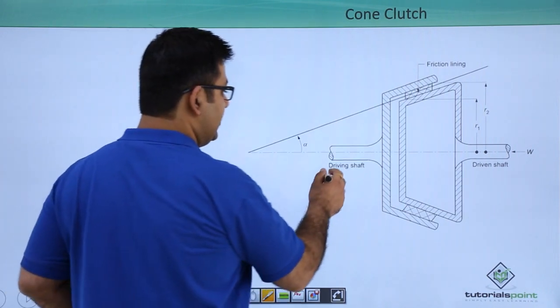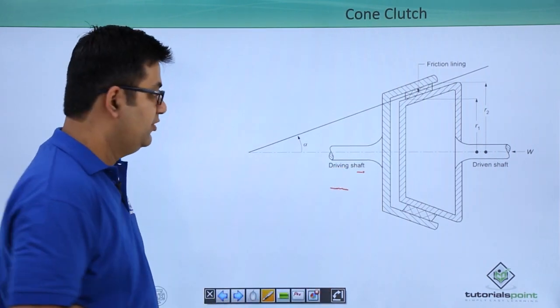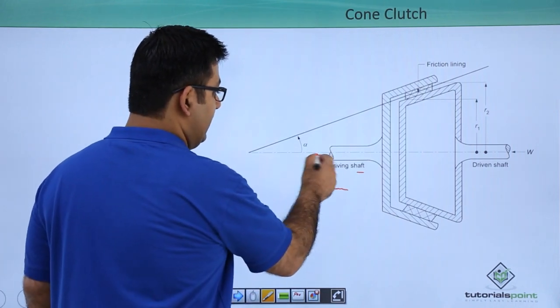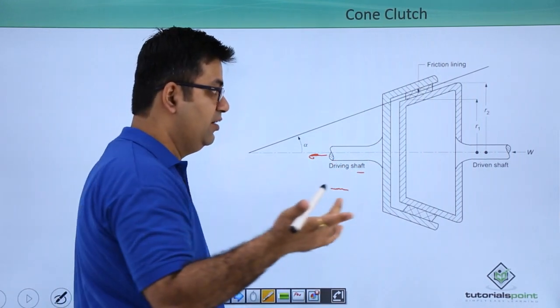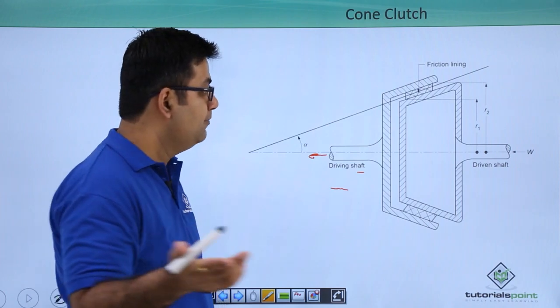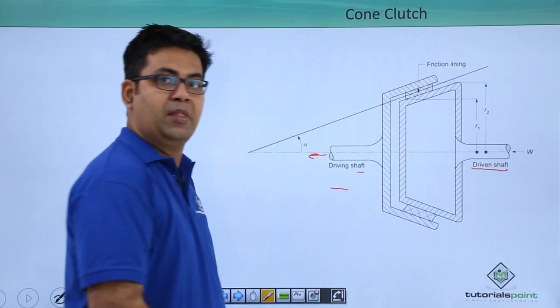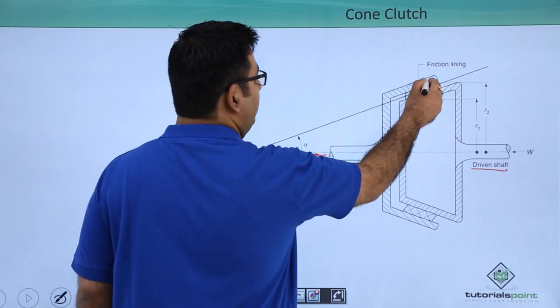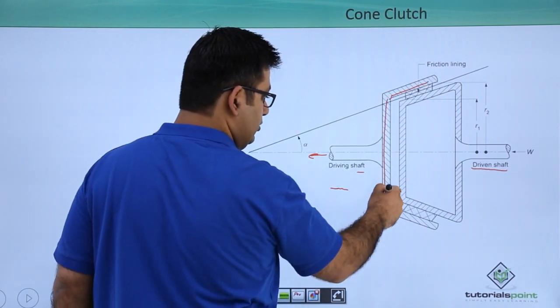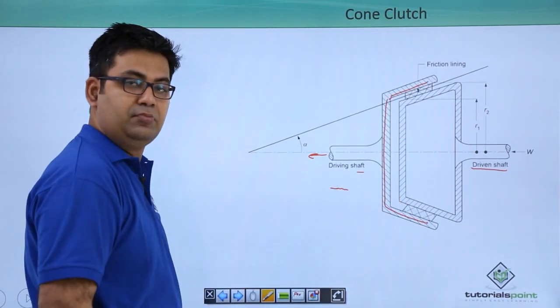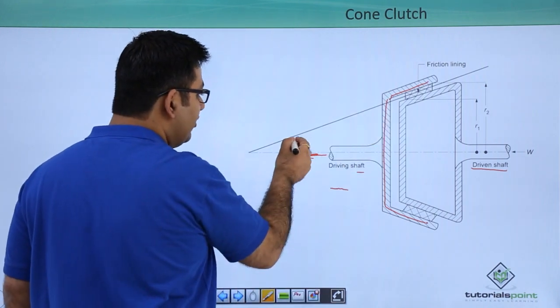This is the driving shaft which is connected to a prime mover, maybe an engine or a turbine, and then this is the driven shaft. It has a cone-like shape - you can see this is a cone, and the half angle of this cone is alpha.